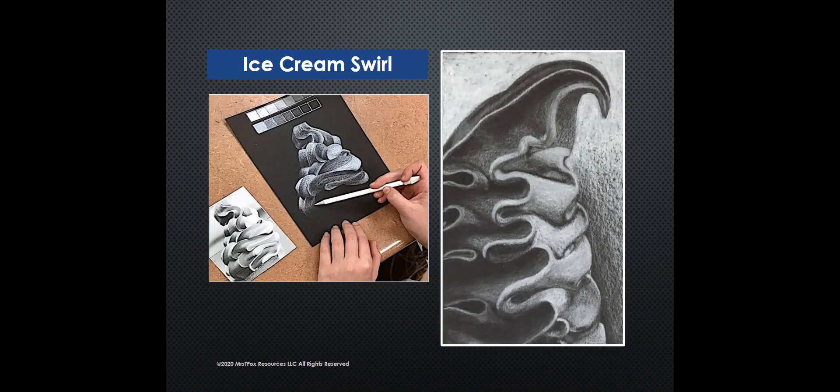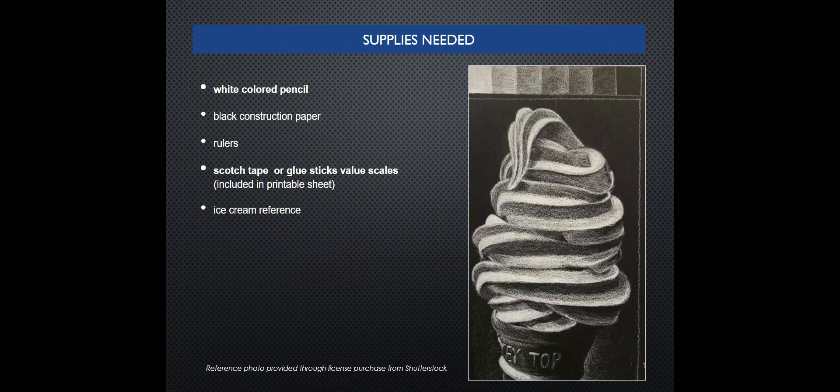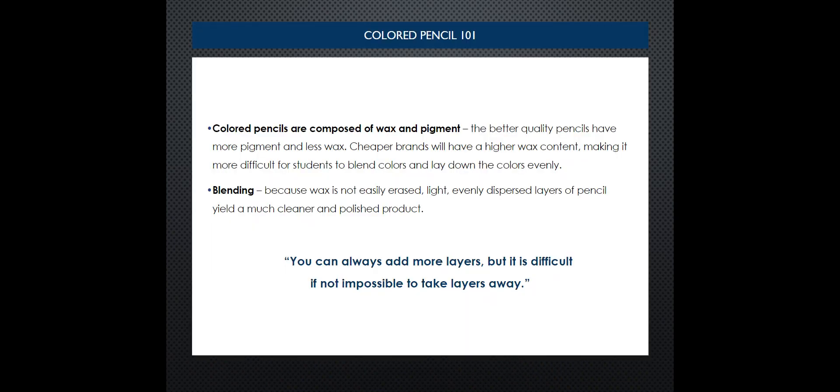Ice cream swirl supplies needed: white colored pencil, black construction paper, possibly a ruler, scotch tape or glue stick for your value scales (more than one), your ice cream reference. Color pencil 101: color pencils are composed of wax and pigment.